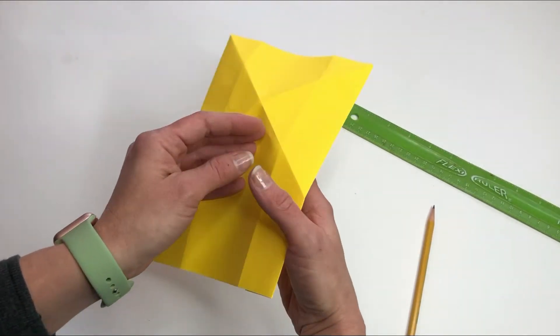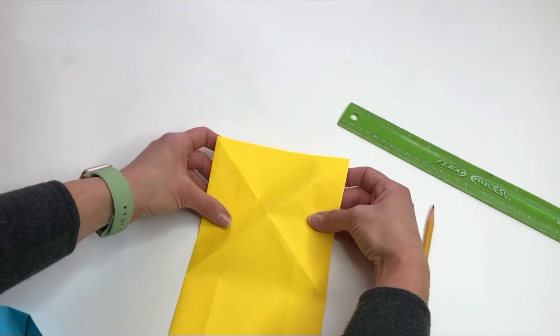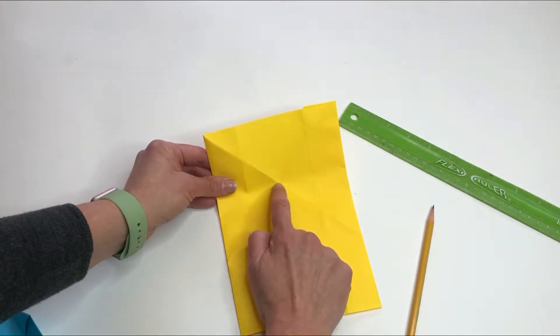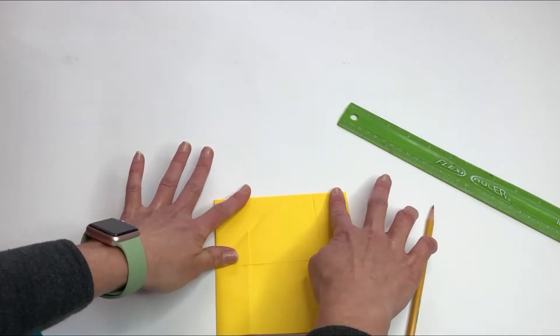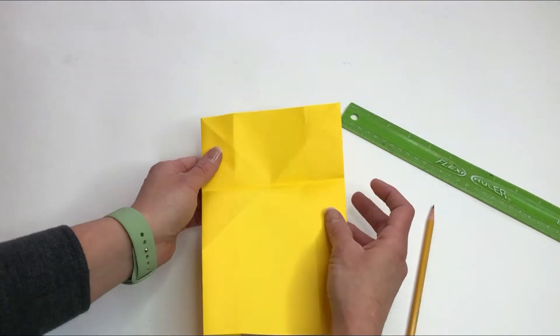Bring your paper over and fold the top forward right at the center point of those two folds. Fold it like this and unfold.